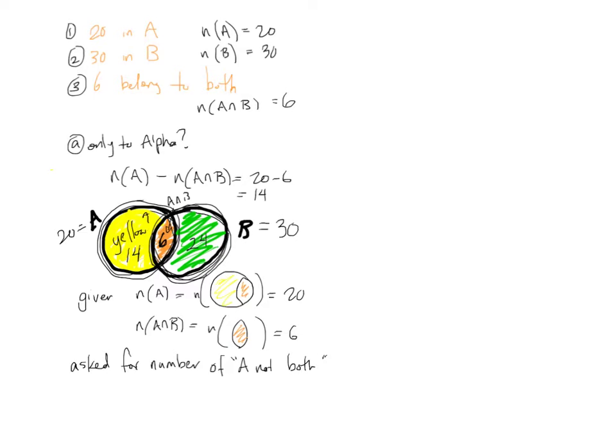So now, how many belong only to the Alpha Club? That would be... You have to translate only to the Alpha Club as, like, A equals 14. Or A, like this? Maybe like that? You could... I mean, basically, you want to say the number of people in A minus the number of people in A intersect B. Mathematically, that's how you're gonna write it. What does that say? Only to A. Only to A.